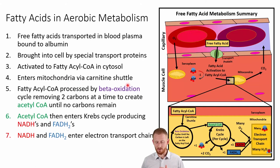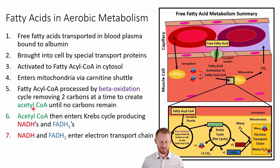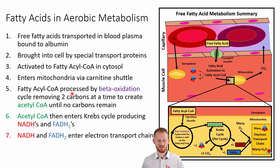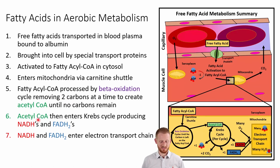The fatty acyl-CoA can then enter the mitochondria using the carnitine shuttle. Once the fatty acyl-CoA molecule gets into the beta oxidation cycle, it pulls off two carbon molecules per cycle and converts those into acetyl-CoA, which is thrown into the Krebs cycle for aerobic metabolism. This process of removing two carbon molecules keeps happening over and over until there are no carbon molecules left to remove. Since there can be several carbon molecules in one fatty acyl-CoA molecule, this process can happen many times, producing a lot of energy.